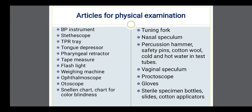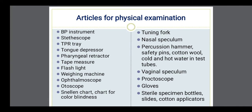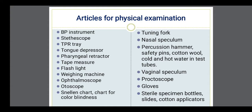TPR stands for temperature, pulse, and respiration. In the TPR tray you have to keep thermometers to measure the temperature, pulse, and respiration — the vital signs of a patient. The next is the tongue depressor, which is used to visualize the oral cavity. Next is the pharyngeal retractor, used for visualizing the pharynx. A retractor is a type of instrument which helps to visualize a particular body part.